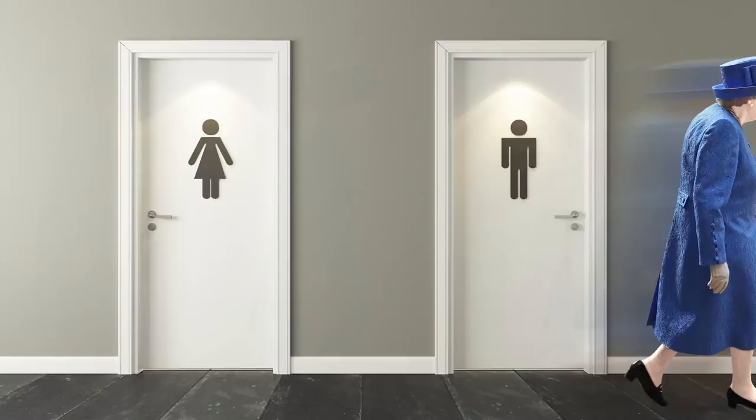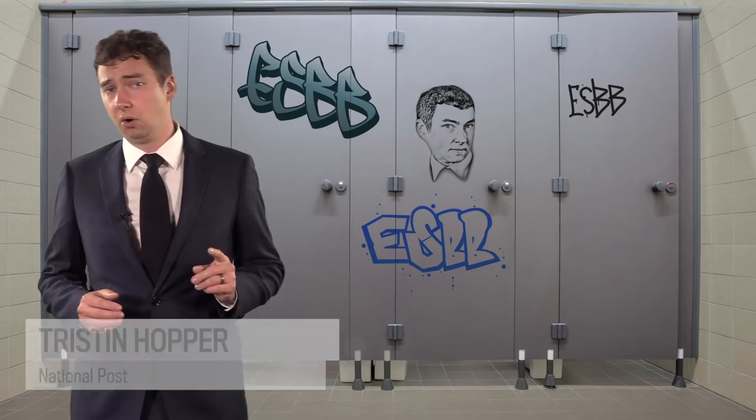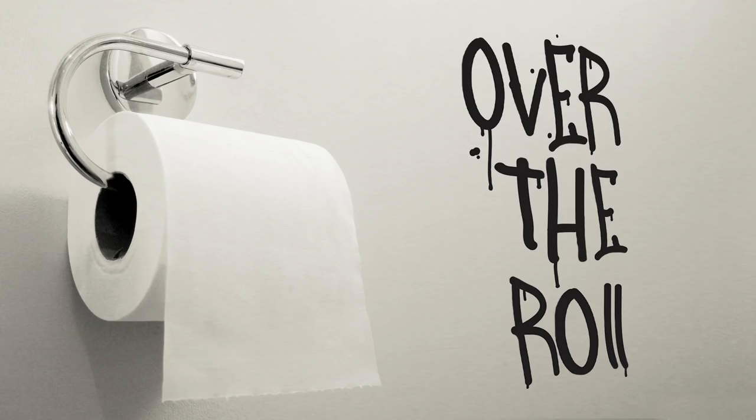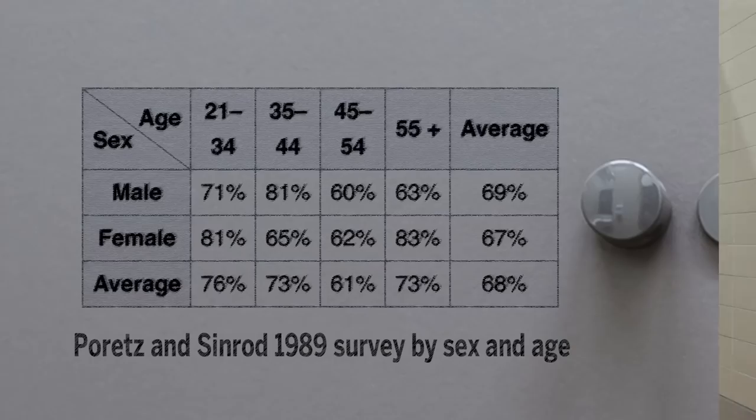For starters, the correct over-the-roll configuration is the one preferred by the vast majority of civilized society. In poll after poll, between 60 and 70 percent of people prefer over-the-roll. If we over-the-rollers voted as a block, we would choose every Canadian government for the rest of time.